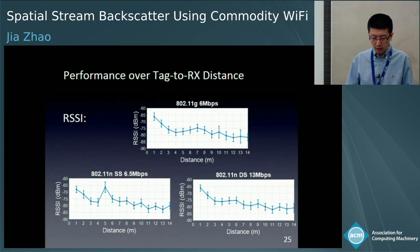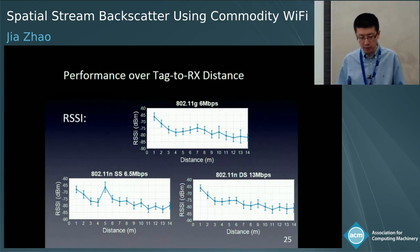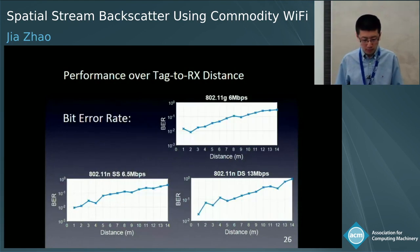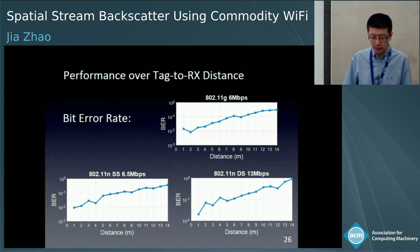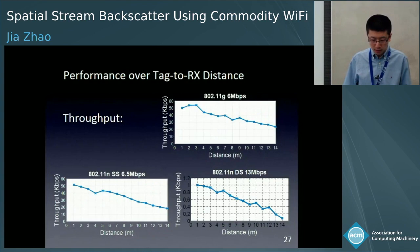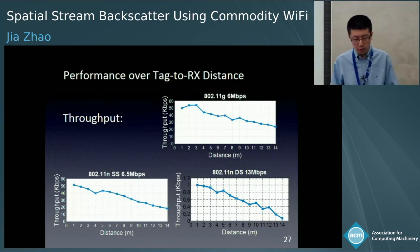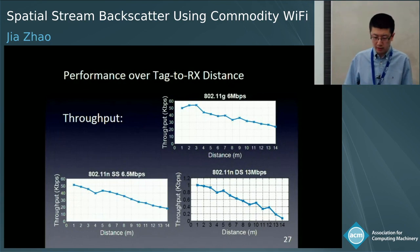This figure shows that backscatter signal strength decreases with the distance between the tag and the Wi-Fi receiver. At 40 meters, the signal strength decreases to -80 dBm. Bit error rate generally increases with distance, and when the distance is less than 3 meters, the bit error rate is less than 6% for all three cases. Throughput also shows a general downward trend over distance. For single-stream signal, throughput is up to 50 kbps, and for multi-stream signal, throughput is up to 1 kbps.